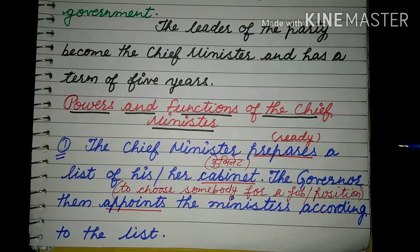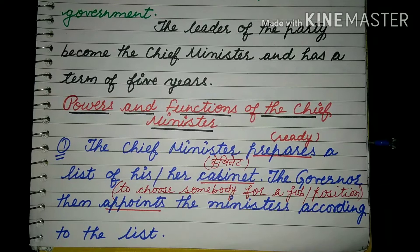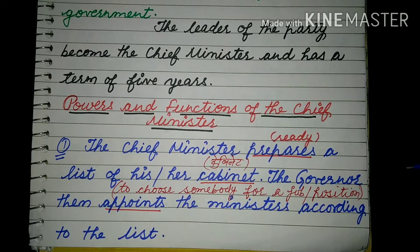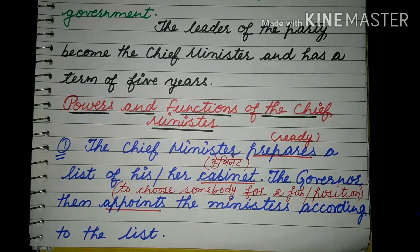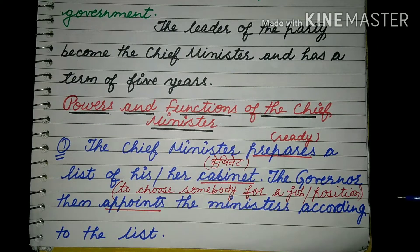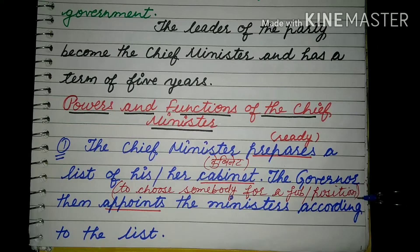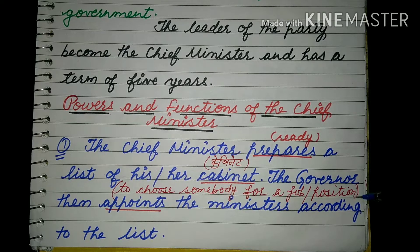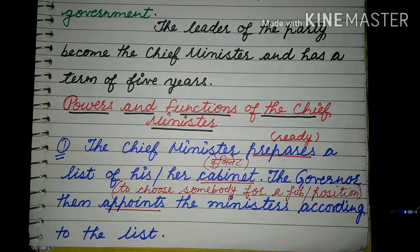The chief minister prepares — यानी ready करता है — a list for the cabinet. जो cabinet के लिए वो female या male की एक list बनाता है। The governor then appoints the ministers according to that list — उसी list के अनुसार governor ministers को appoint करता है, मतलब to choose somebody for a job or position.